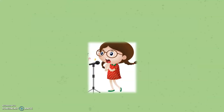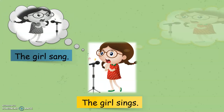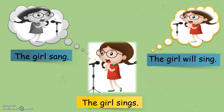Let's see the picture. What do we see in this picture? We see the girl sings. Next picture: the girl sang. And the next: the girl will sing. Now, in these three pictures, we find the action. There are three same action words: sings, sang, and will sing.